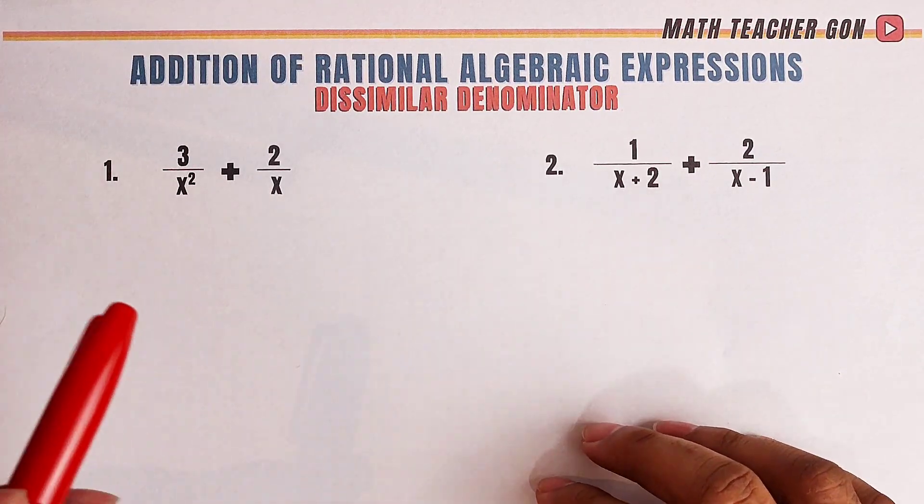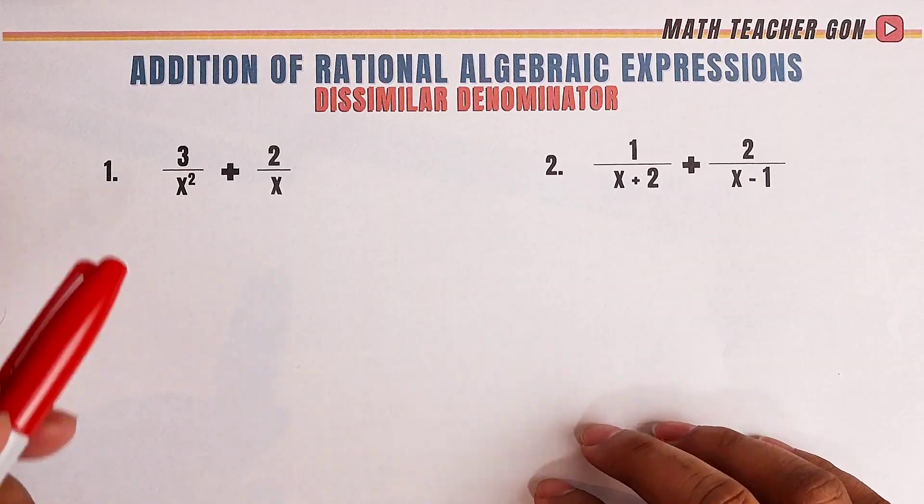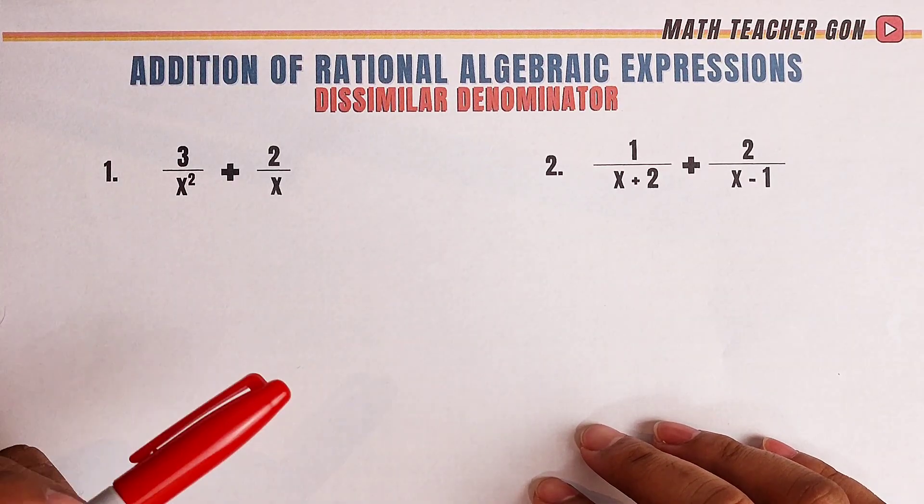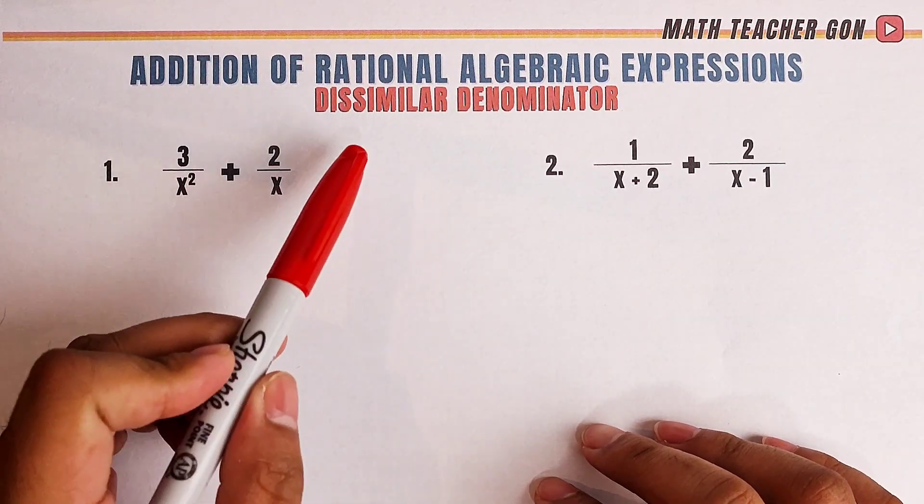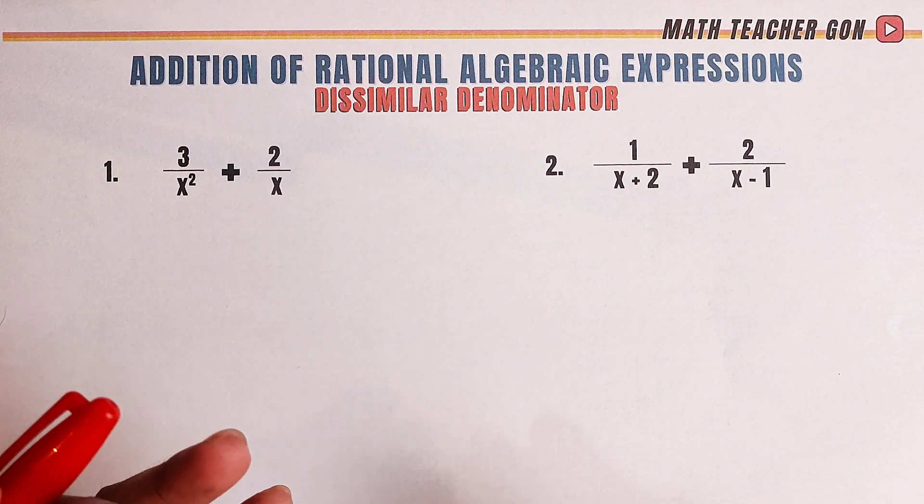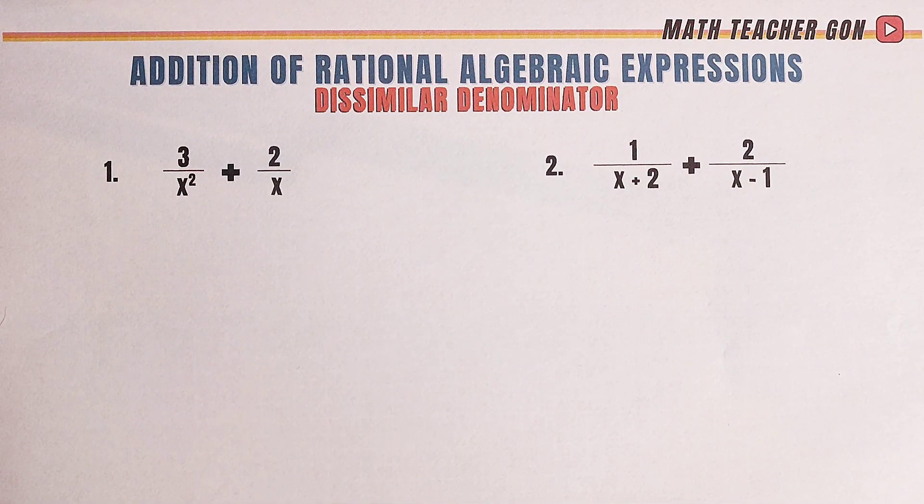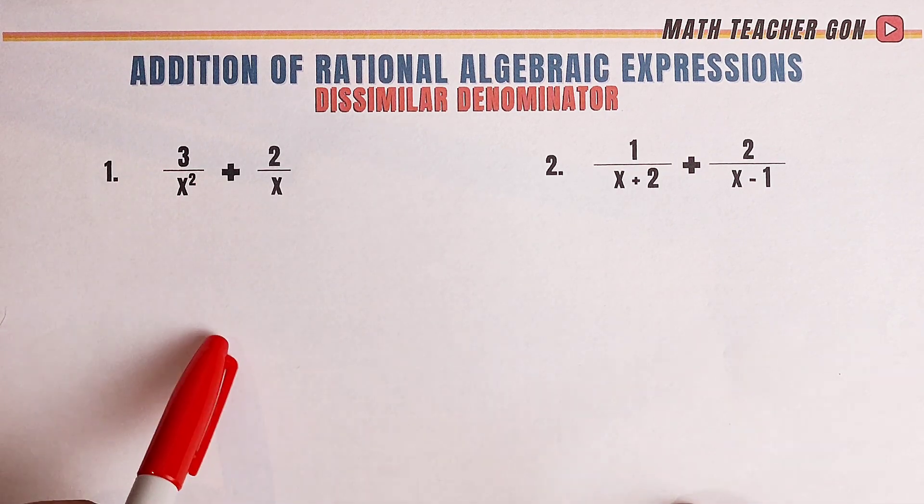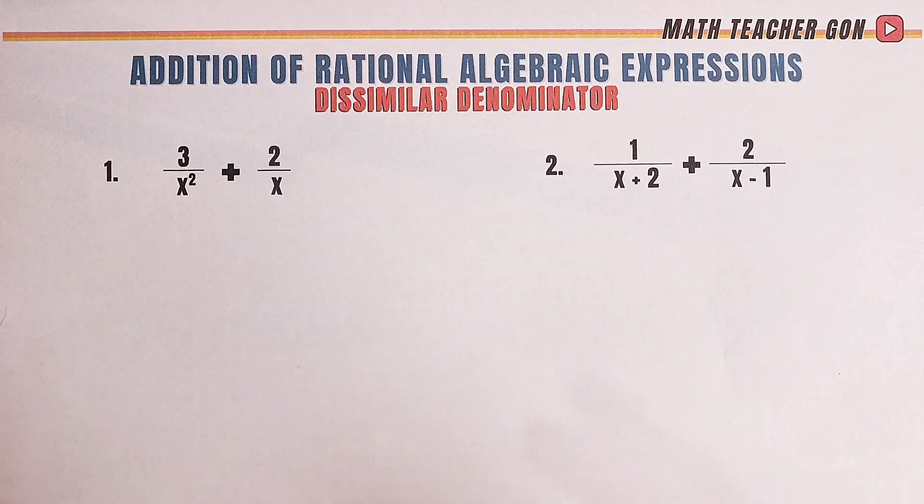So guys, before we start, what we have here are rational algebra expressions that we need to add. And when we say dissimilar denominators, meaning the denominators are different. From our previous videos, we talked about how to add RAE with similar denominators. This time, it's quite different. It's quite difficult.